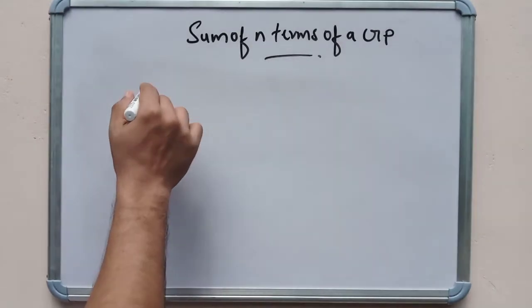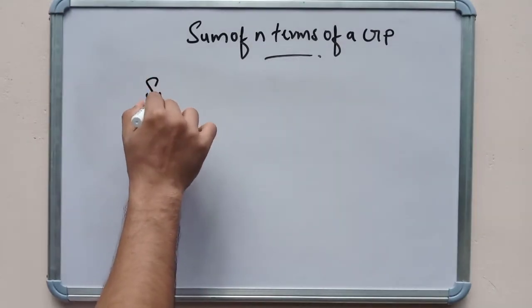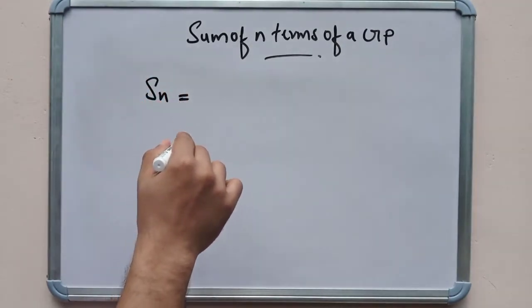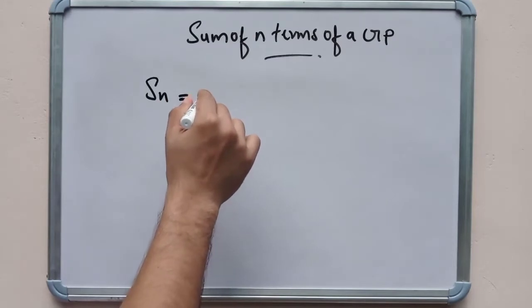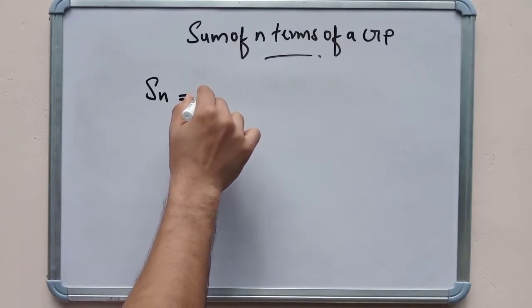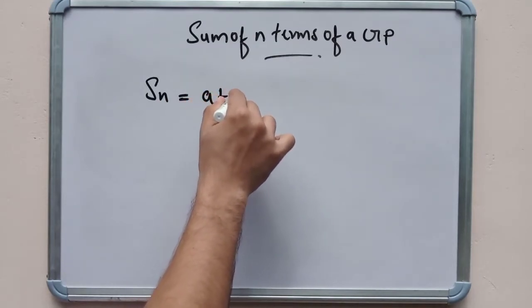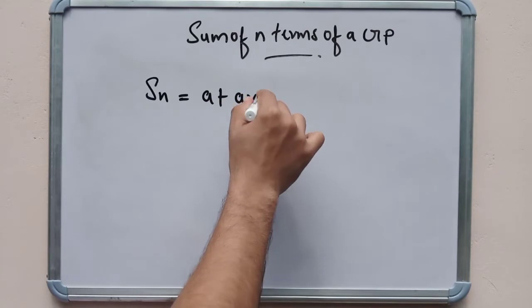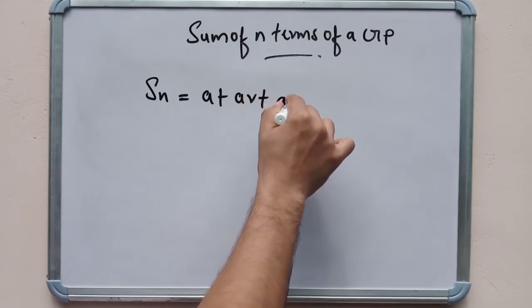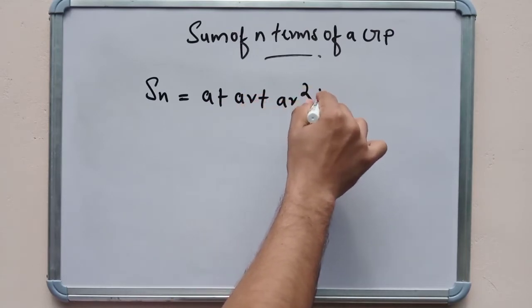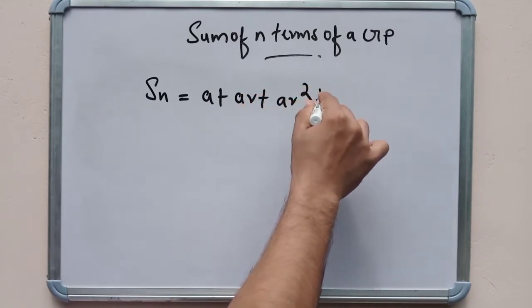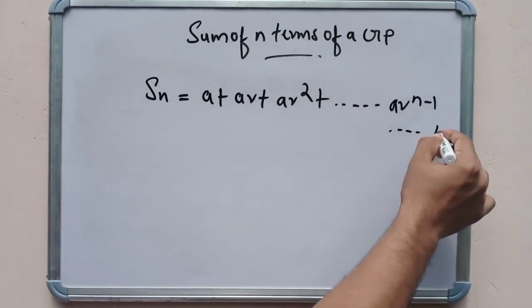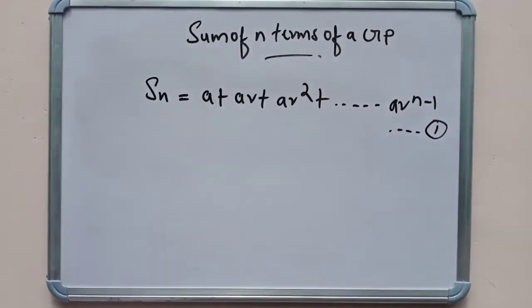The sum of n terms is equal to a plus ar plus ar squared, and so on. This is the first equation.